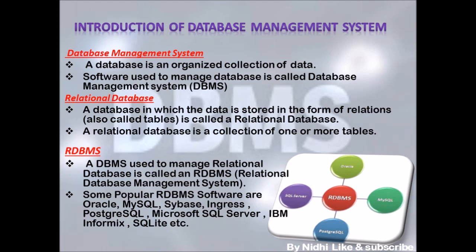A relational database is a database where data is stored in the form of relations, also called tables. You can consider a database as a container, and if that container holds many tables, it is called a relational database — a collection of one or more tables. The software used to manage a relational database is called a Relational Database Management System, or RDBMS. Popular examples of RDBMS include Oracle, MySQL, Sybase, Ingres, PostgreSQL, Microsoft SQL Server, IBM Informix, and SQLite.